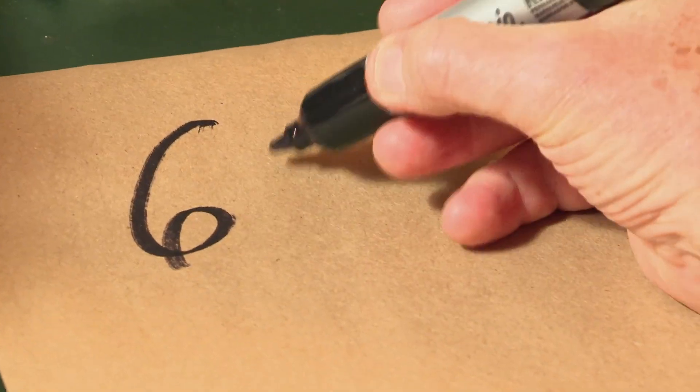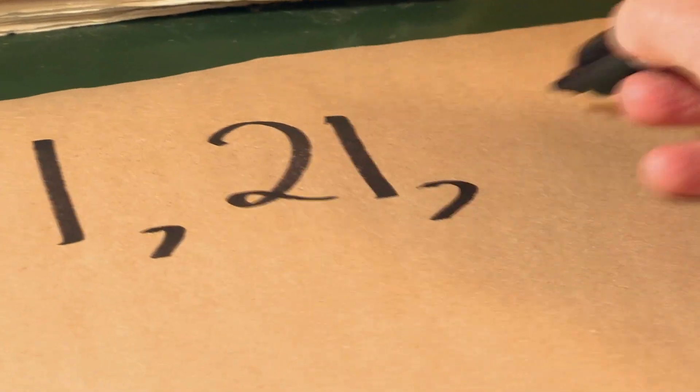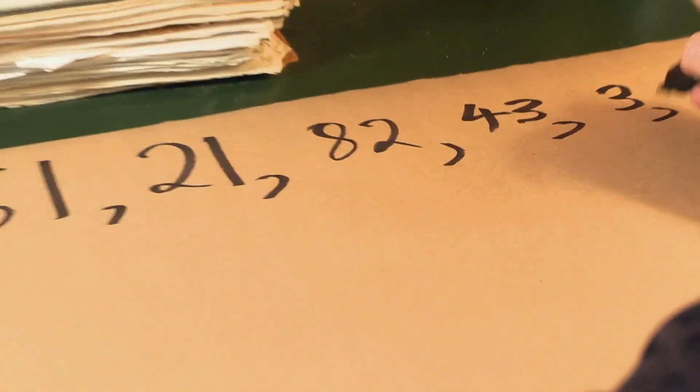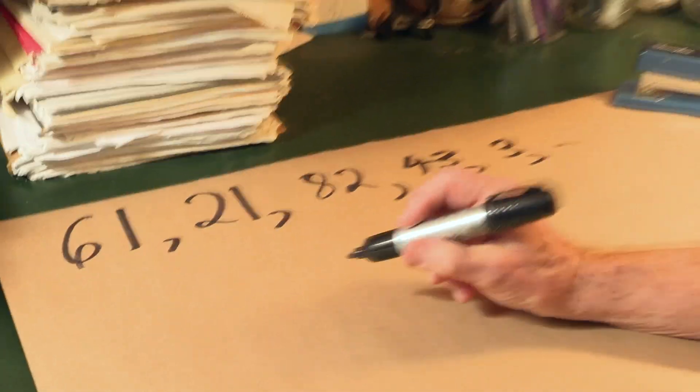This one is another base 10 sequence. But it's lovely. 61, 21, 82, 43, 3. And the question is what comes next? Don't get distracted into looking for something that's too complicated.